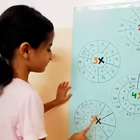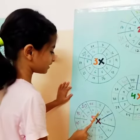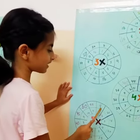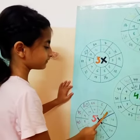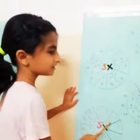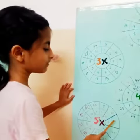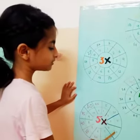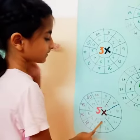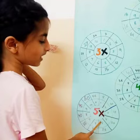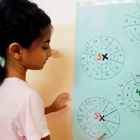5 1's are 5, 5 2's are 10, 5 3's are 15, 5 4's are 20, 5 5's are 25.